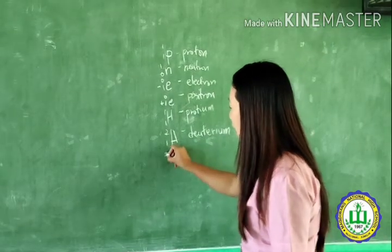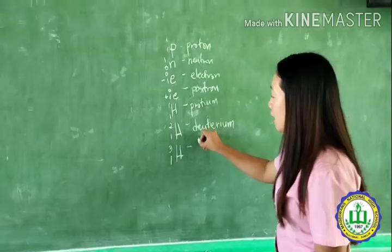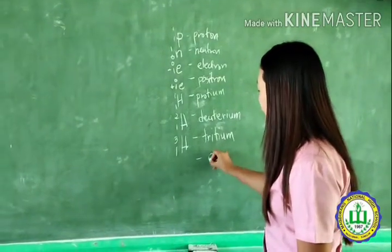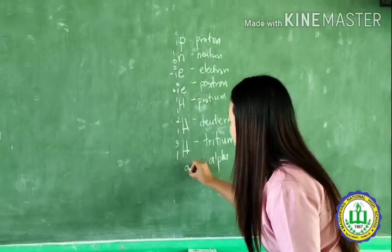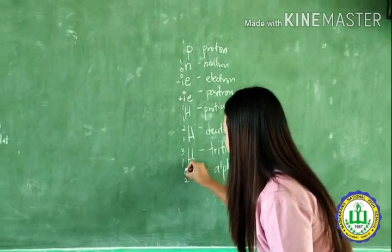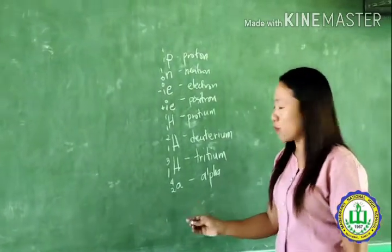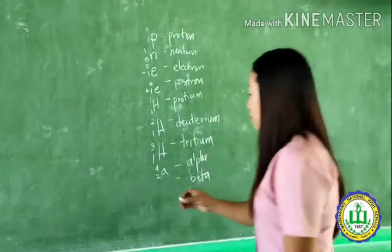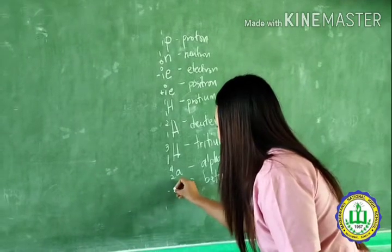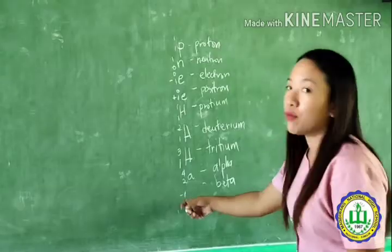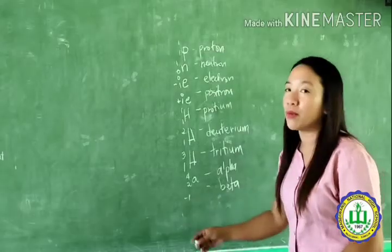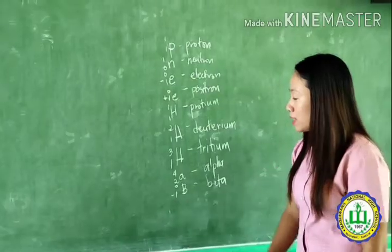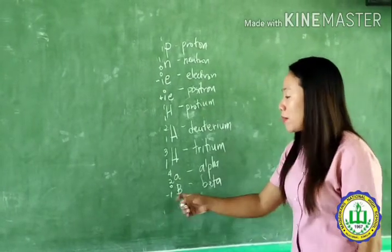Another isotope of hydrogen with atomic mass 3 is tritium. We also have the alpha particle, with atomic number 2 and atomic mass 4. Next to alpha is beta. The symbol of beta is B, with atomic mass 0. If it is negative, we call it beta negative, with atomic number −1. If it is positive, we call it beta positive.